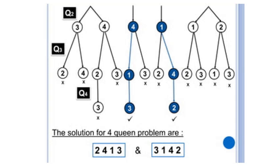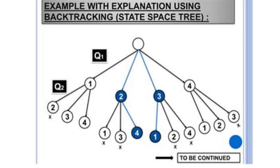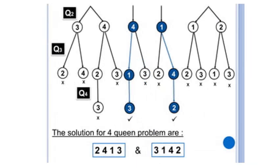With Queen 1 in column 3, Queen 2 has options in columns 1, 2, and 4. Queen 2 in the first position is not attacked by Queen 1. Queen 3 then has options in columns 2 and 4. Placing Queen 3 in column 2 causes Queen 2 to attack it. So Queen 3 goes to column 4. Queen 4 then takes the only remaining column — column 2. This gives us the solution 3-1-4-2.